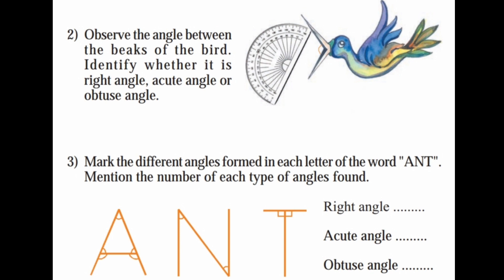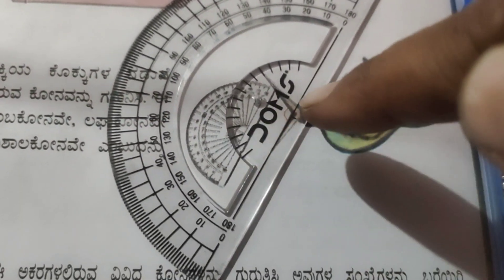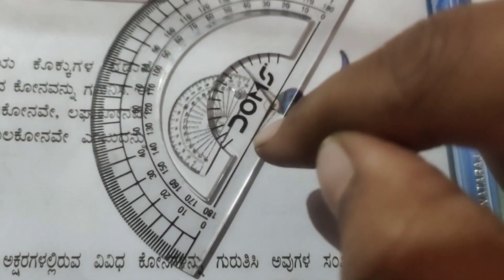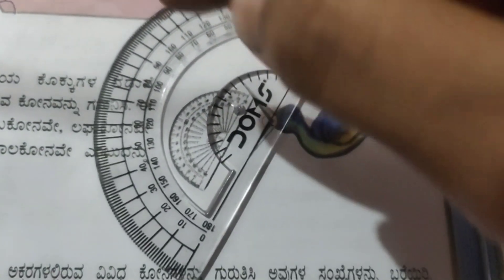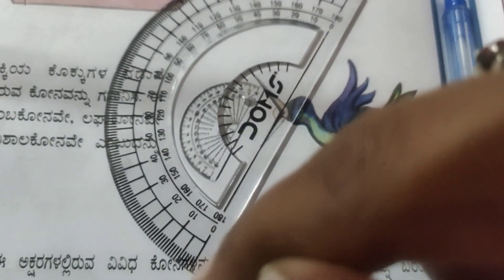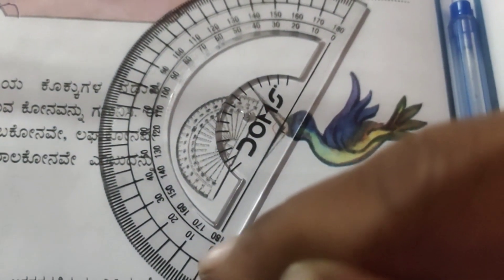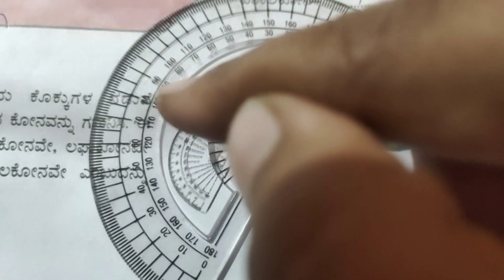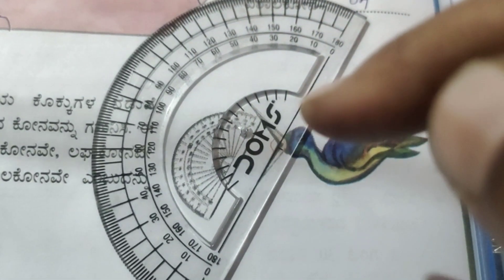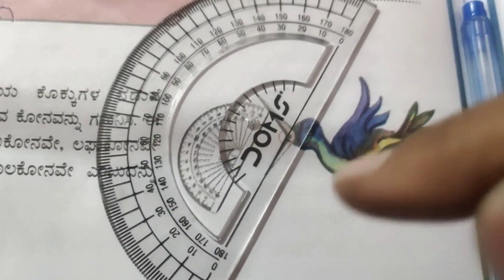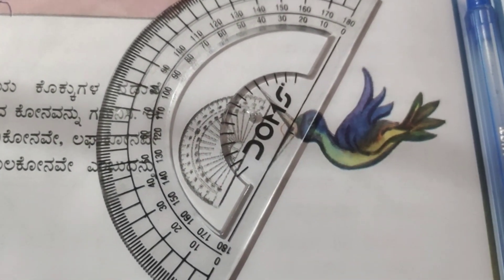Second activity: observe the angle between the beaks of a bird. Identify whether it is a right angle, acute angle, or obtuse angle. Now we will measure the angle. Place the protractor, align the beak line with zero, and count: 0, 10, 20, 30, 40, 50, 60, 70, 80, 90, 100, 110, 120. The line coincides at 120 degrees, which is more than 90 degrees. So the angle formed between the beak is an obtuse angle.